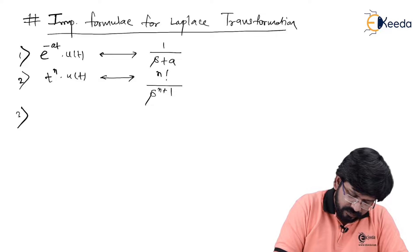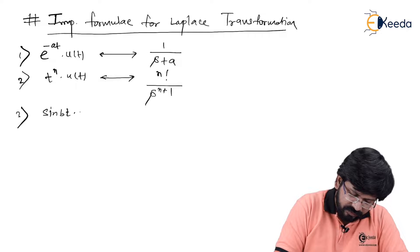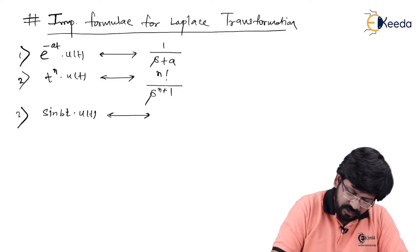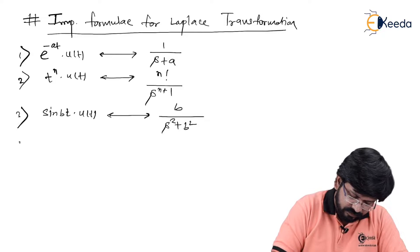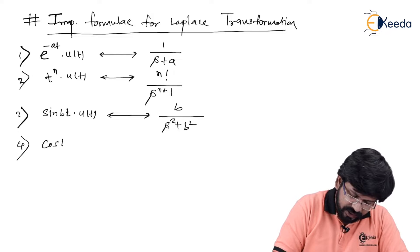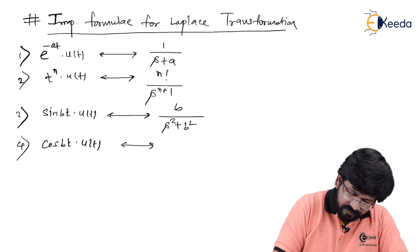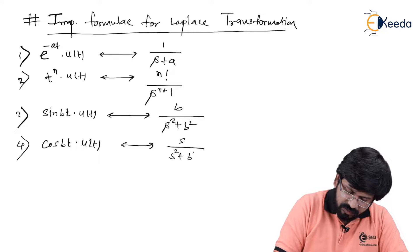Third, for a trigonometric signal: sin(bt)·u(t) has Laplace transform b upon s squared plus b squared. Whereas for cos(bt)·u(t), the Laplace transform is simply s upon s squared plus b squared.